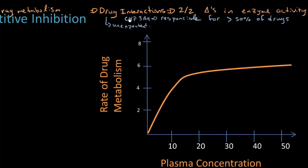With pharmacodynamics, we're dealing at the level of the receptor, so those drug interactions are more predictable — if two drugs work at the same receptor, giving them together might produce too much of that effect. Here, we're dealing with pharmacokinetic interactions, specifically the metabolism portion, which is why understanding the core concepts will help you greatly.